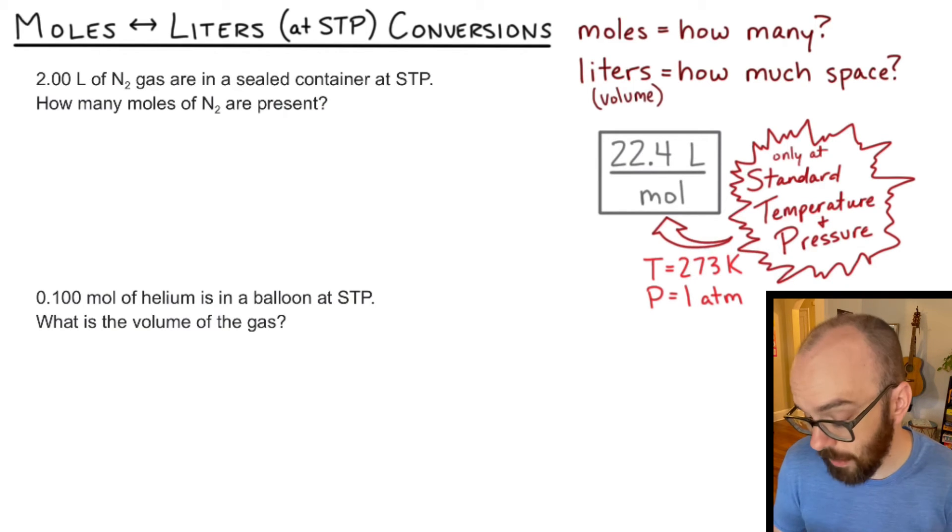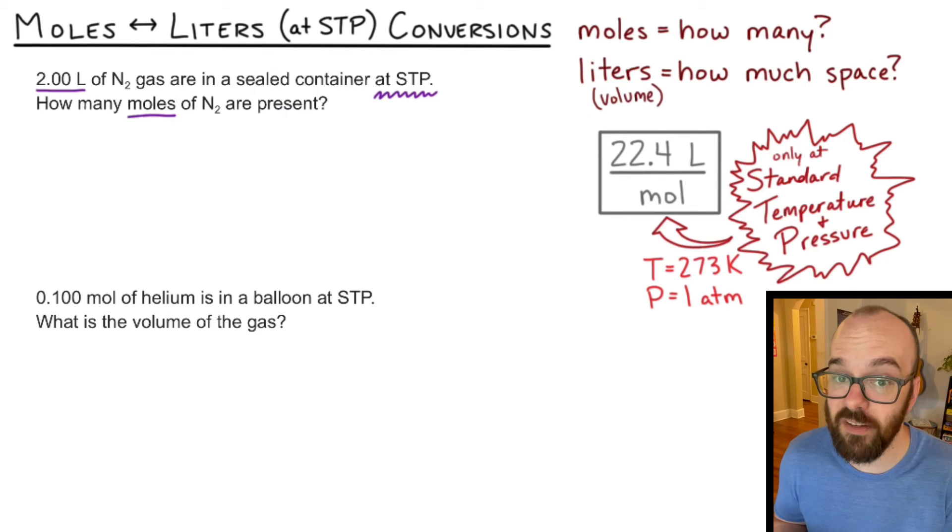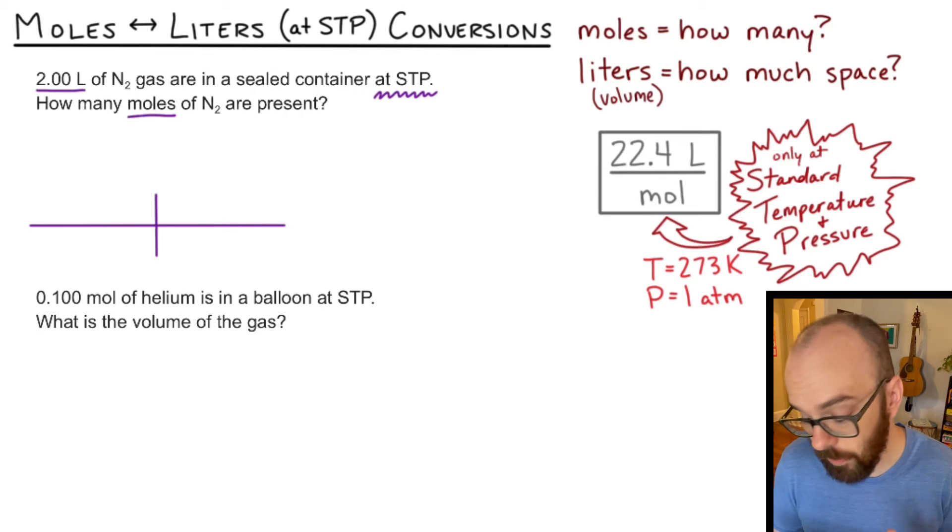So let's look at a couple problems. This first problem says 2.00 liters of nitrogen gas are in a sealed container at STP. How many moles of nitrogen are present? Well, we have 2.00 liters. That's what we know. And it says how many moles. So we're converting from liters to moles. And it says at STP, which means that our conversion factor here is valid. If this wasn't STP, we couldn't use 22.4. We have to use something else. So let's set up our conversion table.